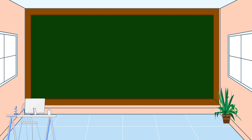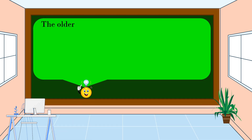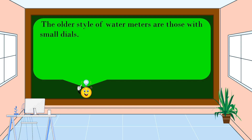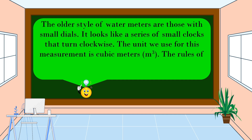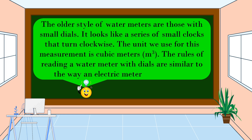Next, we're going to discuss water meter reading. The older style of water meters has small dials — it looks like a series of small clocks that turn clockwise. The unit used for this measurement is cubic meters. The rules for reading a water meter with dials are similar to the way an electric meter is read.